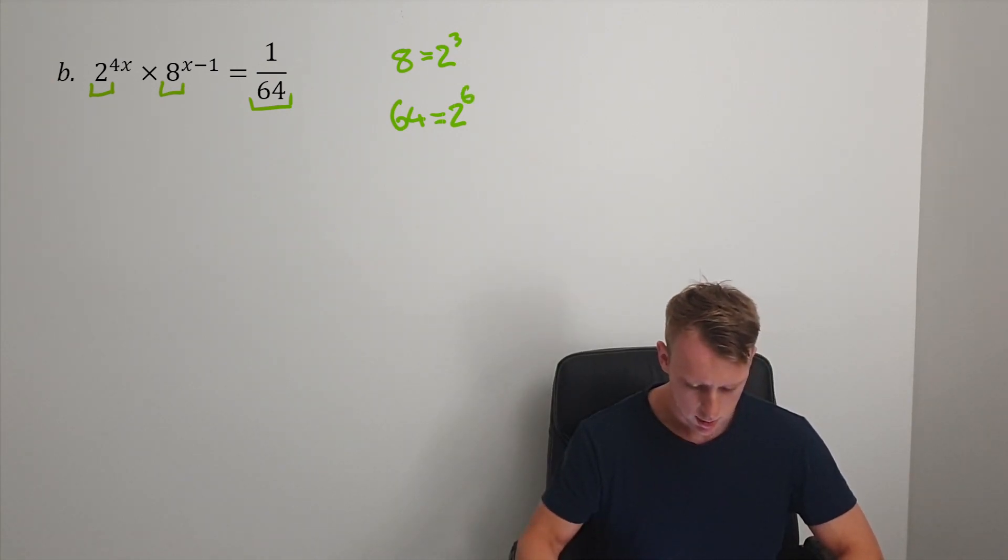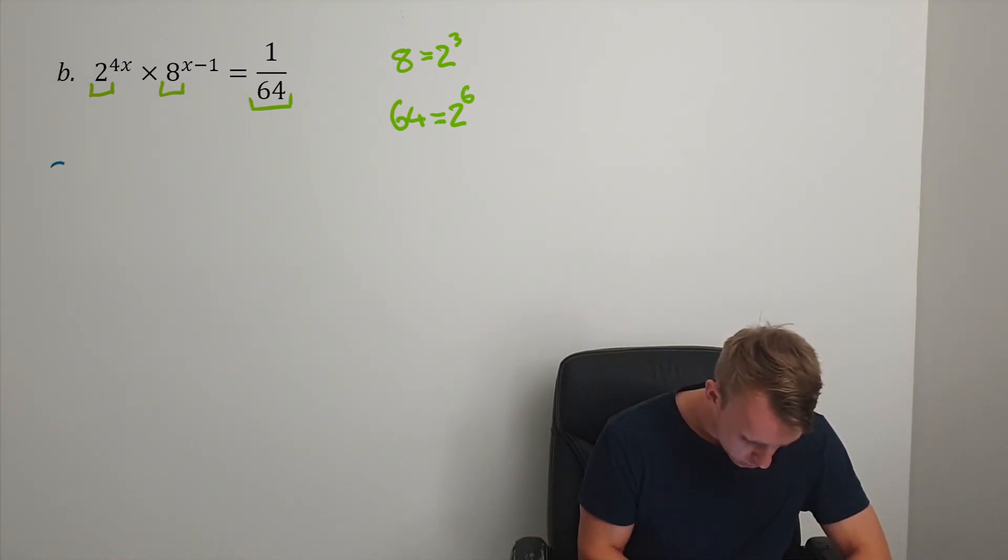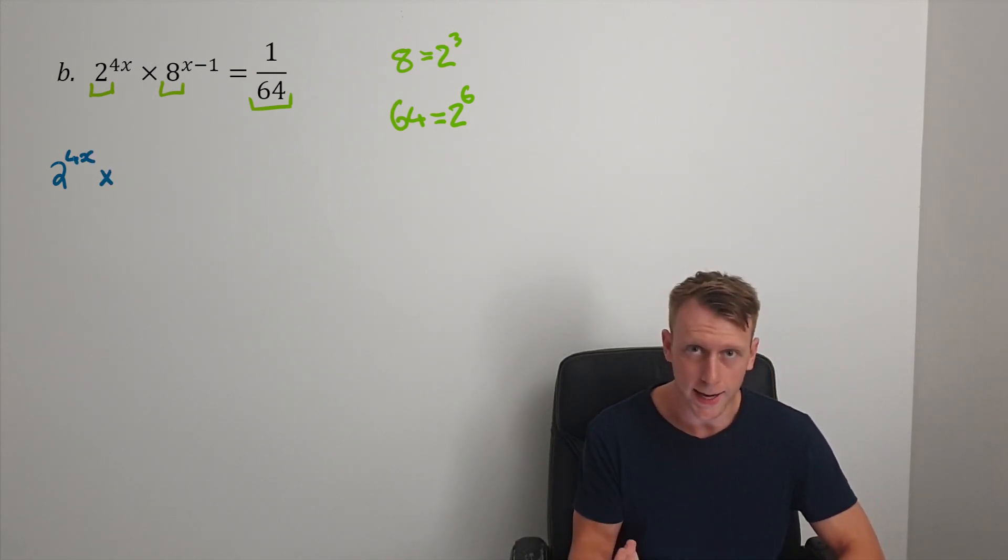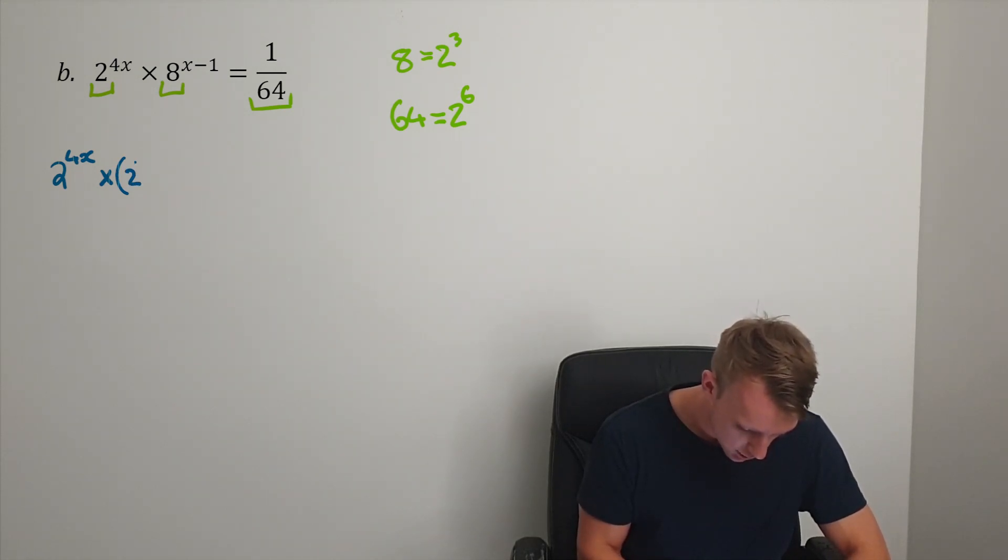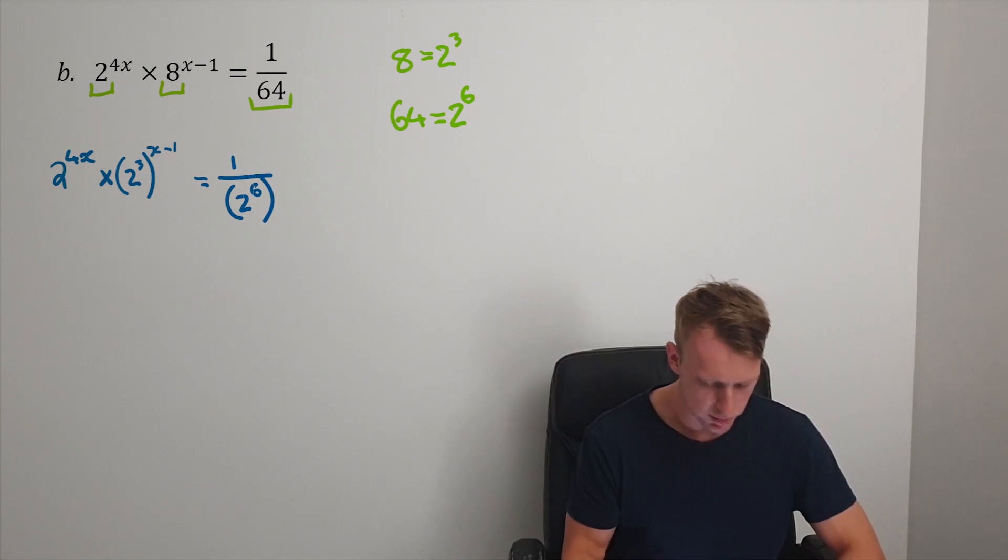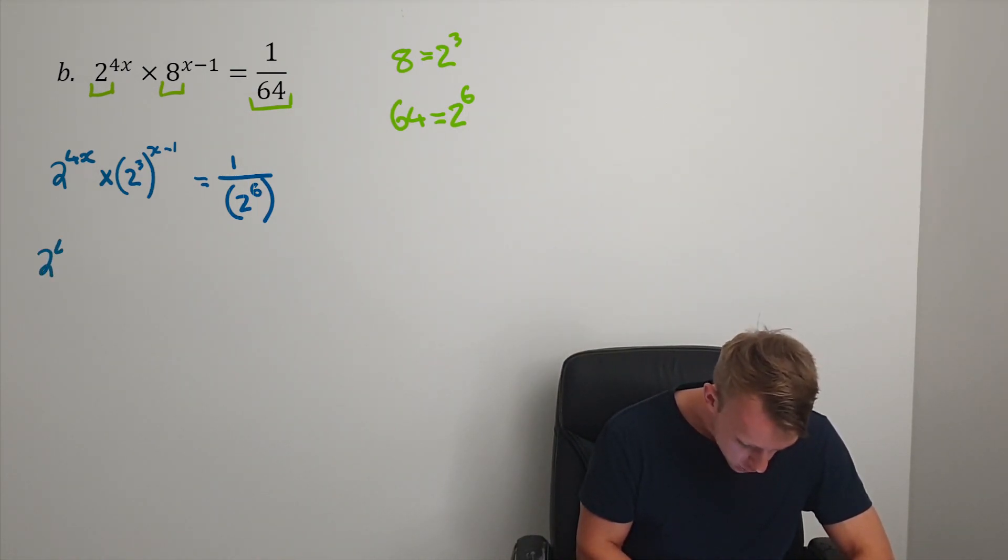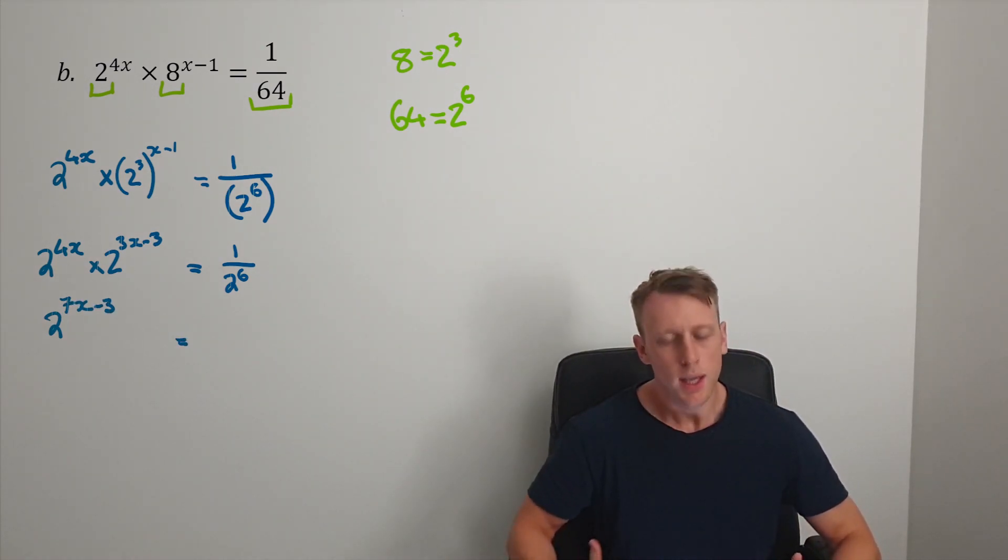You then make the substitution. We've got 2^(4x) multiplied by 2^3 to the power of (x-1), equals 1 over 2^6. Simplify it out: 2^(4x) multiplied by 2^(3x-3) equals 1 over 2^6. Keep simplifying: 2^(7x-3) equals 2^(-6).